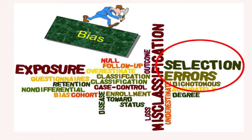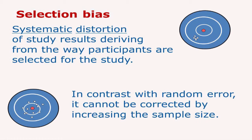So what is the problem? The problem is the possibility of selection errors, more likely in hospital-based studies. Selection error or selection bias is a systematic distortion of study results deriving from the way participants are selected for the study. In contrast with random error, it cannot be corrected by increasing the sample size.